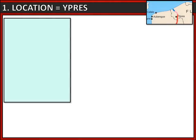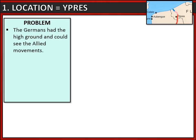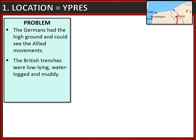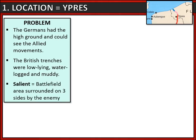Let's look at our first location: Ypres. Ypres was a key area of fighting during World War One. The Germans had the high ground and that meant they could see the Allied movements and it gave them advantage. The British were forced to build their trenches in the low-lying waterlogged and muddy ground which was a disadvantage. Ypres was also a salient, which means a battlefield area surrounded on three sides by the enemy, which made it very difficult to attack.